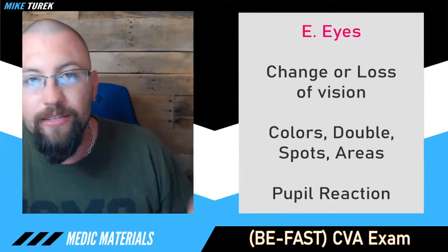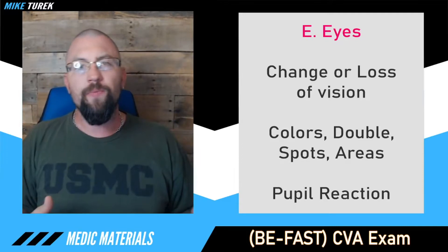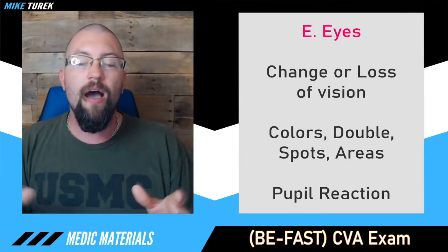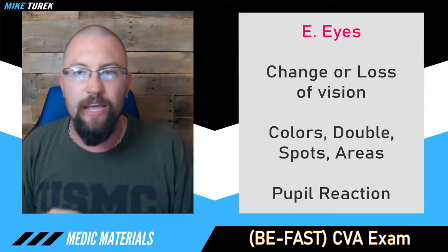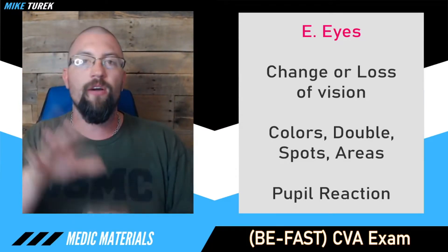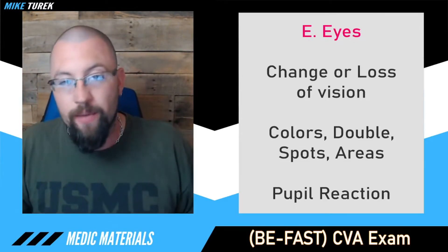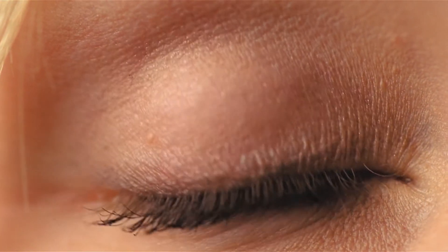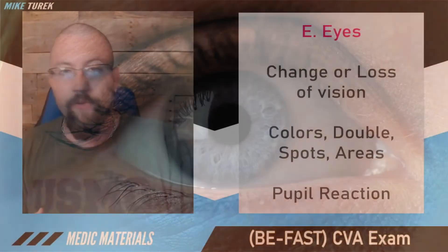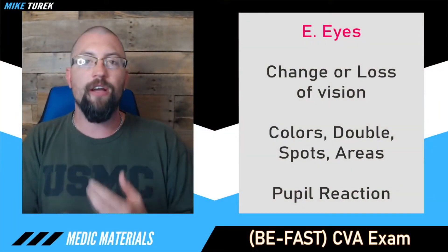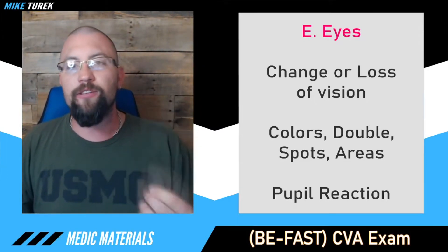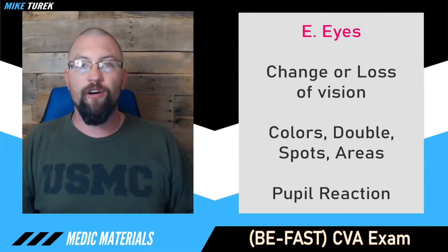Next we're going to talk about E for Eyes. Is there a change or a loss of vision? Changes like someone changes colors — maybe their eyesight is normal and then all of a sudden they can't see anything but green, spots in their eyes, flickers of light, doubled vision, or blurry or black areas. We also want to check pupillary reaction — equal, round, reactive pupils. We want to make sure they're not blown, sluggish, dilated, or fixed, and there's no gaze to one side, up or down, left or right.